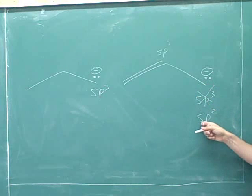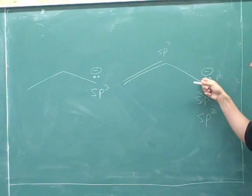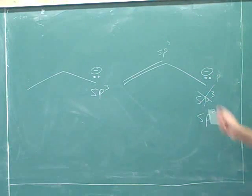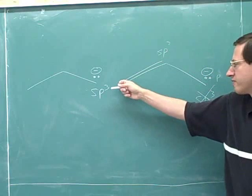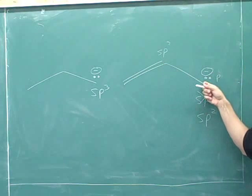If this carbon is sp2 hybridized, it does have a p orbital. It puts its lone pair in a p orbital, and then the molecule is conjugated because we have side-to-side overlap of the p orbital here, here, and here.